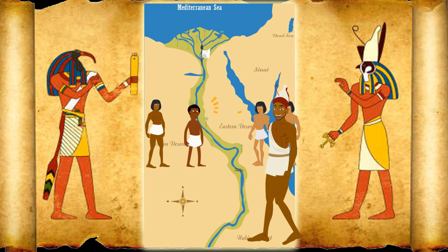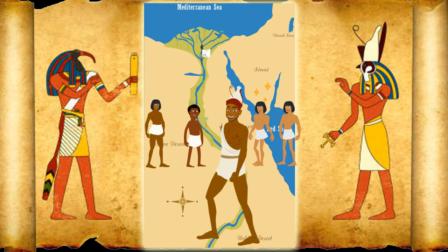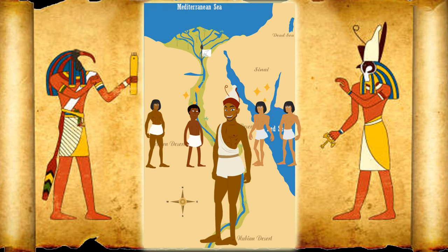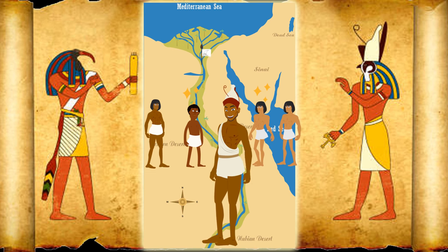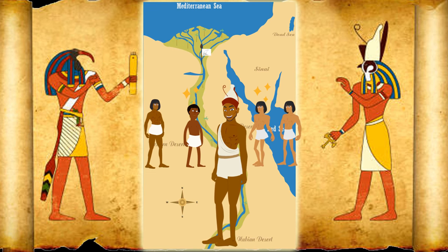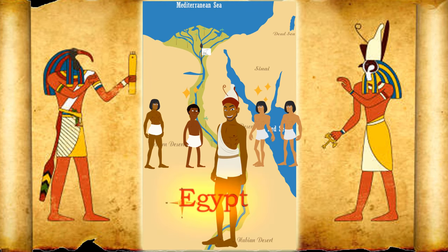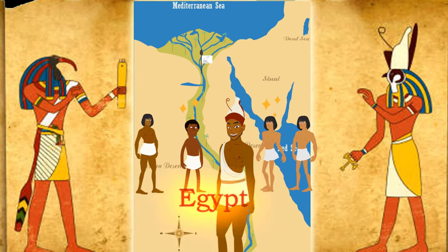And it did the trick. The people started calling their combined land 'the Two Lands.' The Two Lands became known as Egypt. The land where the last battle occurred was built up by Menes to become the largest city in ancient times.